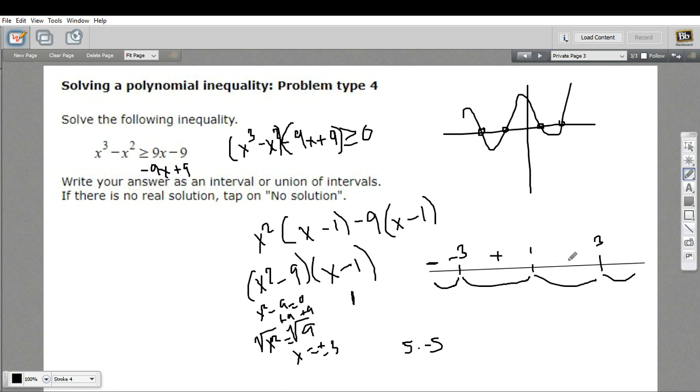I need a number between 1 and 3. I guess I'll take 2. So 2 squared is 4 minus 9 is a negative 5. And 2 minus 1 is 1. So that's negative 5 times 1. That's a negative number, negative 5.